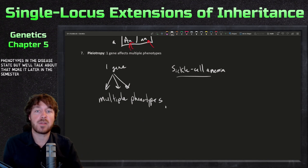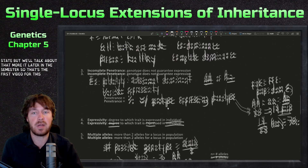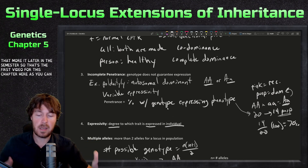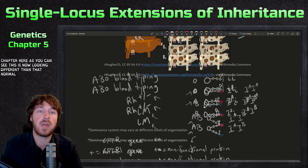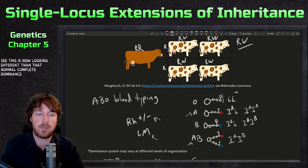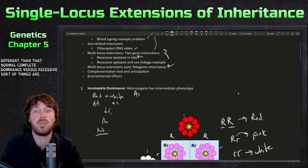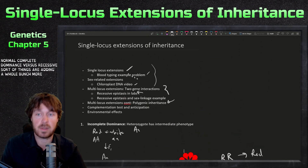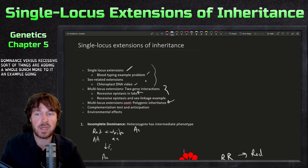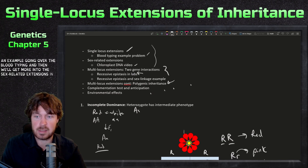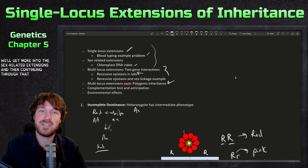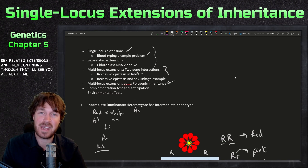That's the first video for this chapter. As you can see, this is now looking very different from that normal complete dominance dominant/recessive model — we're adding a whole bunch more to it. The next video will be an example going over blood typing, then we'll get into the sex-related extensions and continue through the chapter. See you all next time — have a great day!